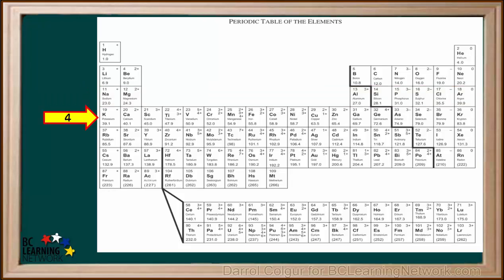The fourth period, called Period 4, contains elements 19 to 36, potassium to krypton. Count the number of elements in Period 4. You'll see there are 18.